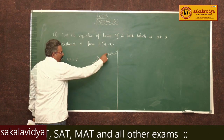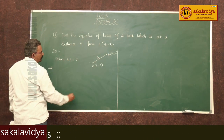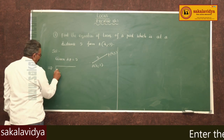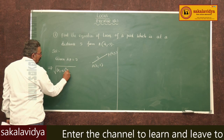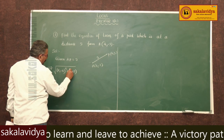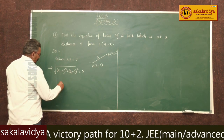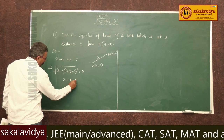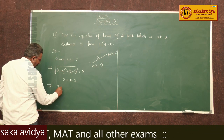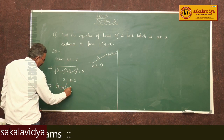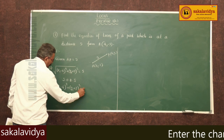Using the distance formula, AP can be written as: root over (x1 minus 4) whole square plus (y1 plus 3) whole square, equals 5. Squaring on both sides, we get (x1 minus 4) whole square plus (y1 plus 3) whole square equals 25.